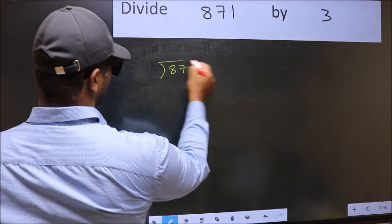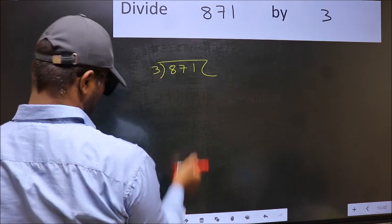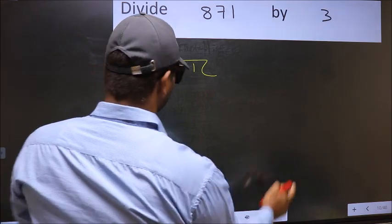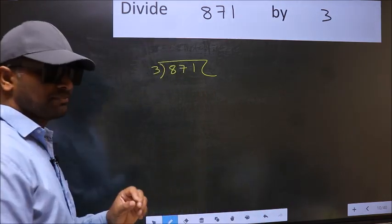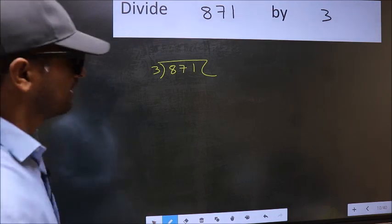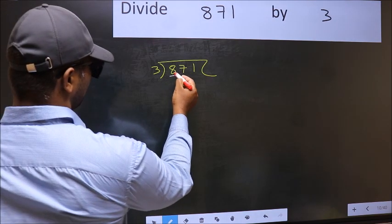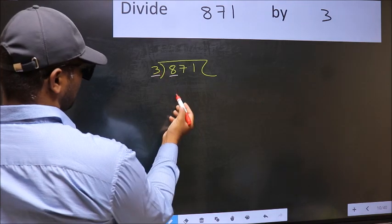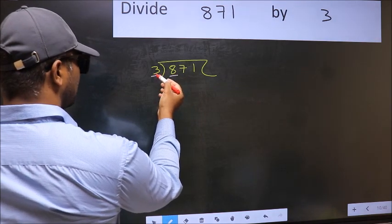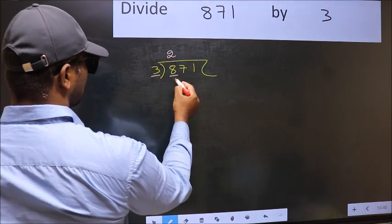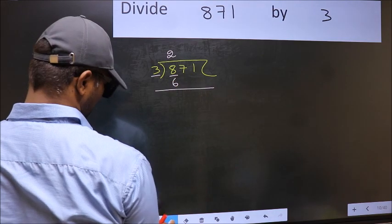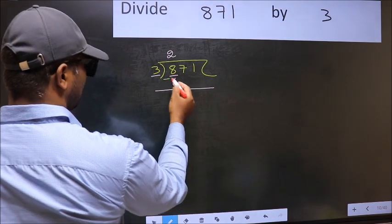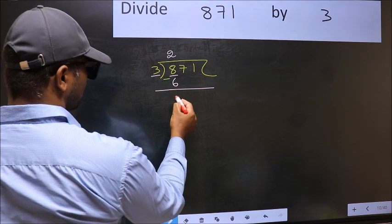871 and 3 here. This is your step 1. Next, here we have 8 and here 3. A number close to 8 in the 3 table is 3×2=6. Now you should subtract. 8 minus 6 is 2.